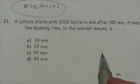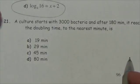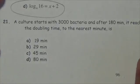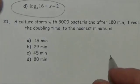This problem states that a culture starts with 3,000 bacteria and after 180 minutes it reaches 48,000 bacteria. We need to find the doubling time to the nearest minute.